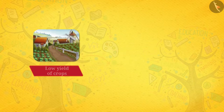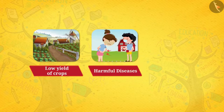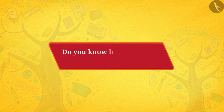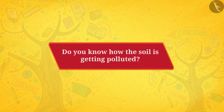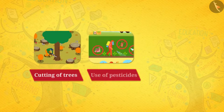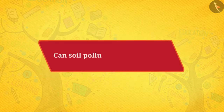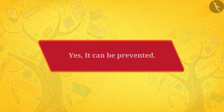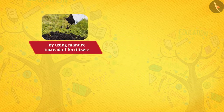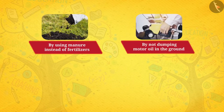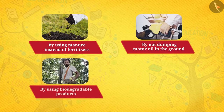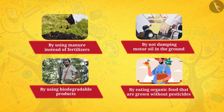But what if the soil starts getting polluted? We all face problems due to soil pollution, for example low yield of crops and harmful diseases such as cancer. The main causes of land pollution are cutting of trees and use of pesticides and fertilizers. Soil pollution can be prevented by using manure instead of fertilizers, not dumping motor oil in the ground, using biodegradable products, and eating organic food grown without pesticides.